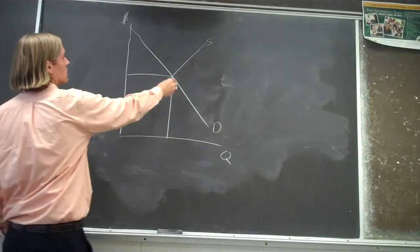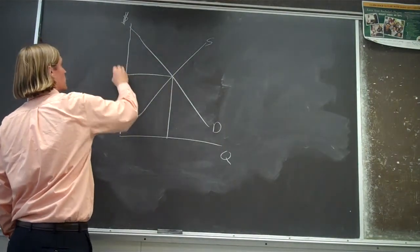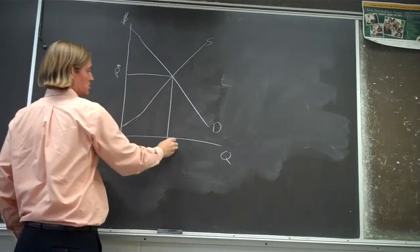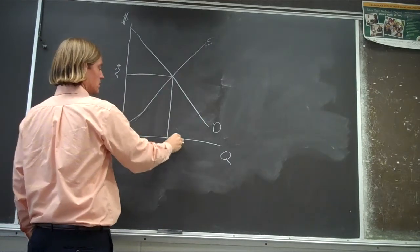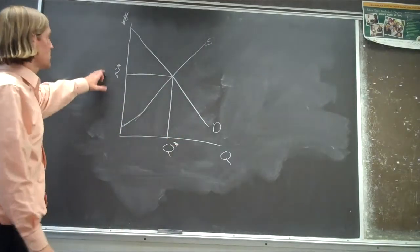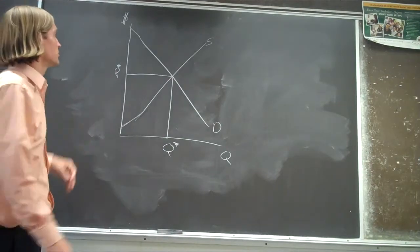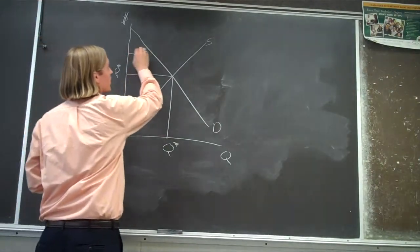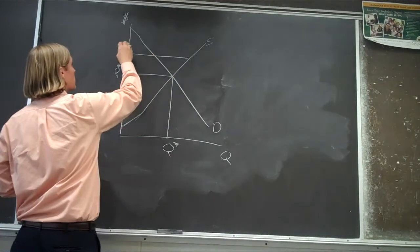So we've got this market, we've got the equilibrium price P star, Q star, and the government comes in and says, you know what, that price is too low. We're going to put a price floor in up here, a binding price floor.